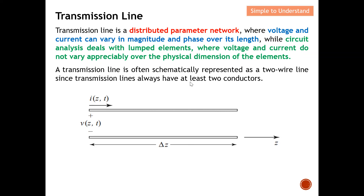Under circuit theory analysis, a transmission line is often schematically represented as a two-wire line, since a transmission line always has at least two conductors. We use this two-conductor representation to represent the transmission line.